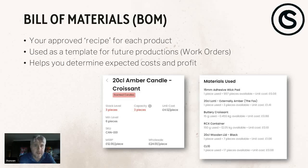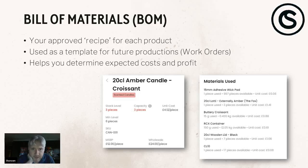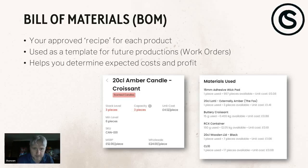The bill of materials is just your approved recipe for the product. If you're using Candle Shack recipes, just print one out as a start point. You can put it into Excel, or as you can see on screen here, this example shows the materials used — the ingredients required to make one of these products. The example on screen is a 20cl amber candle made with croissant fragrance. You can see the unit cost is £4.12 per piece, a minimum stock level of six pieces, an SKU, a retail price, and a wholesale price.